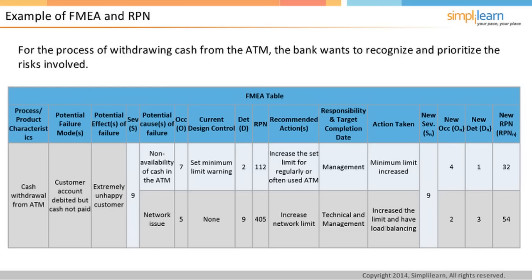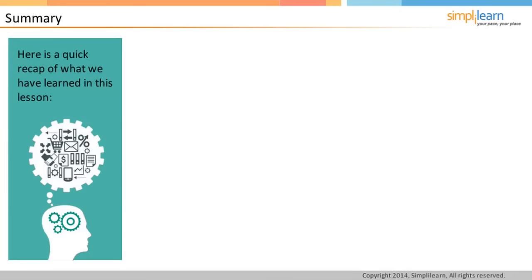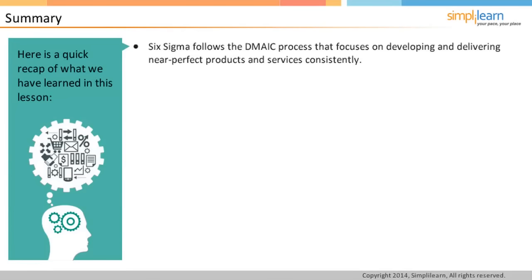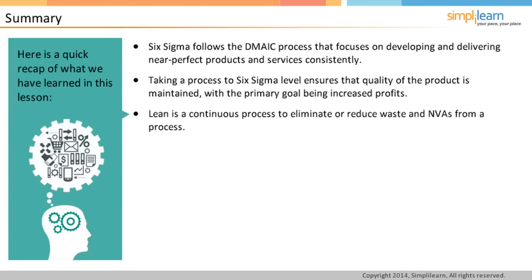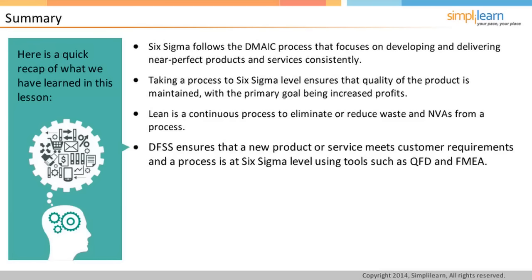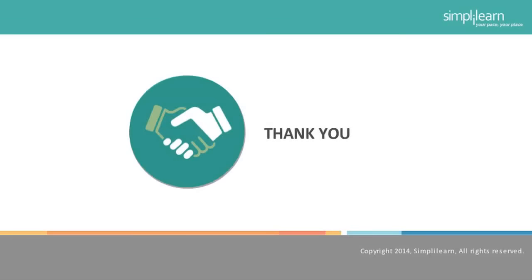Six Sigma follows the DMAIC process that focuses on developing and delivering near-perfect products and services consistently. Taking a process to Six Sigma level ensures that quality of the product is maintained, with the primary goal being increased profits. Lean is a continuous process to eliminate or reduce waste and non-value-adding activities from a process. DFSS ensures that a new product or service meets customer requirements and that a process is at Six Sigma level, using tools such as QFD and FMEA. With this, we have come to the end of this lesson. Let us learn about the Define Phase in the next lesson.